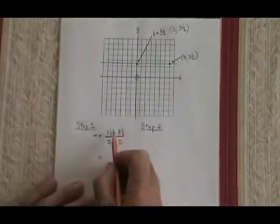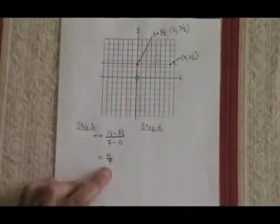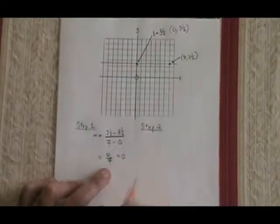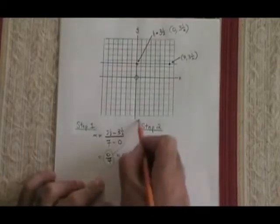Simplifying, 3.5 minus 3.5 is 0. 7 minus 0 is 7. I have a slope of 0 over 7. I know that equals 0, but I still want my slope in the form of a fraction, so I'm still going to use this for step 2.